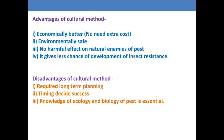These are all the major and other cultural practices that suppress the pest population in our main field or agroecosystem. Advantages of cultural methods: economically better — no need for extra cost; environmentally safe because no chemicals are used; no harmful effect on natural enemies of the pest; less chance of development of insect resistance since no chemicals are used.